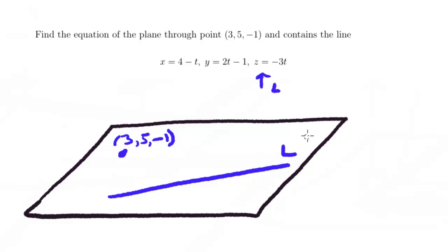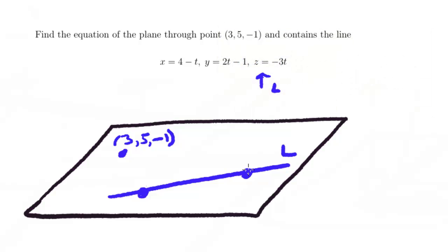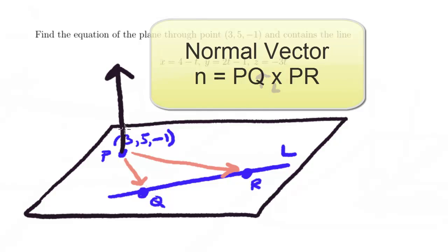So the idea is that we can find the equation of a plane given three points. Well, I have one, I can take two that are on the line, and then I'll just call that one P, this one Q, and this one R. And now that I have three points, I can connect them to create two vectors that lie on this plane. And then with that, I can make a normal vector, and I can do that by doing the cross product between PQ and PR.